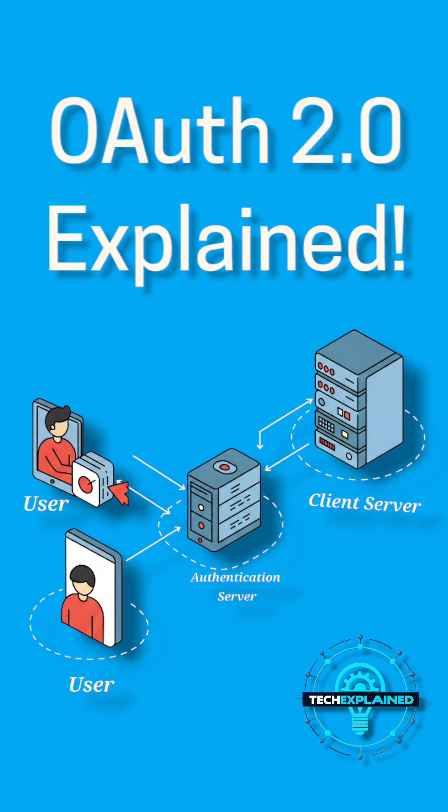OAuth 2.0 allows apps to access user data without sharing passwords. It involves four key players. First, there's the user — that's you — trying to log in. Next, the client, or the app you're logging into. Then, the authorization server, like Google or Facebook, verifying your identity. Finally, the resource server, where your protected data is stored.